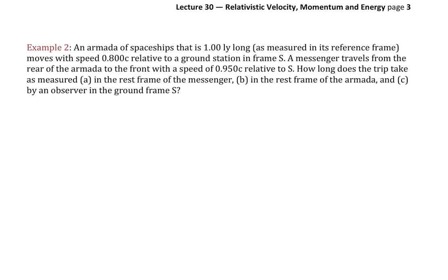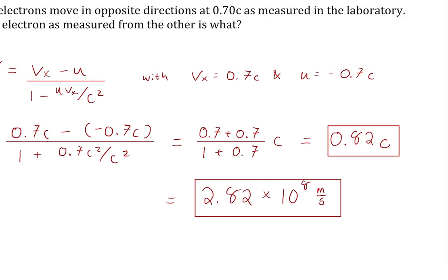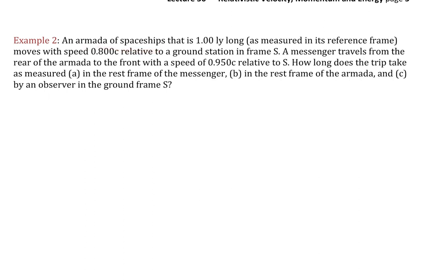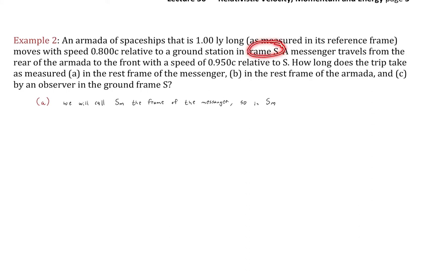Example 2: A giant fleet of spaceships — a spaceship armada — is one light year long as measured in its own reference frame, which is its proper length. It moves at 80% the speed of light relative to a ground station in frame S. A messenger travels from the rear of the armada to the front at 95% the speed of light, also relative to the ground station. We're given two velocities both relative to S. We need to find how long the trip takes as measured in the messenger's frame, the armada's frame, and by an observer in the ground frame.